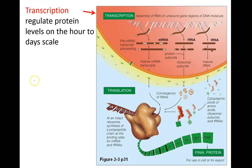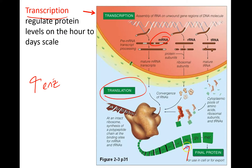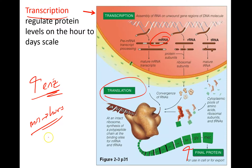What about the birth of a protein? If you're going to increase enzyme levels, one of the most common ways to do it is to transcribe the mRNA for it. If you transcribe the mRNA, it leaves the nucleus and initiates translation so that you get more final protein. This typically takes on the order of minutes to hours — it's a slower process, and it's usually what we refer to as chronic.